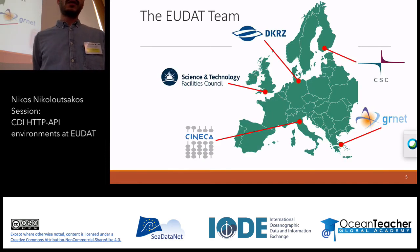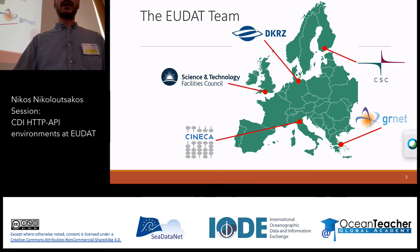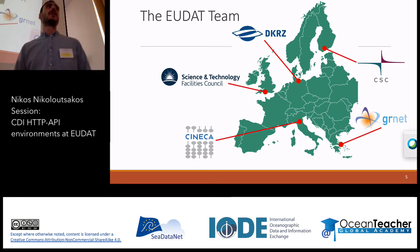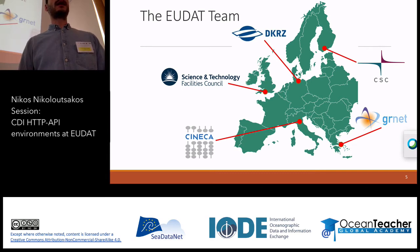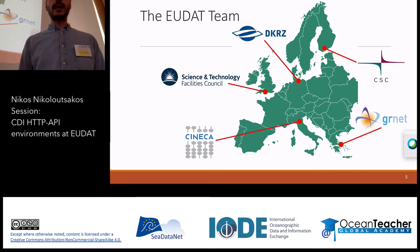Here are the five partners of the EUDAT team: GRNet, CSC, DKRZ, STFC, and Syneca. All those members commit their data center and resources to host the distributed data and to replicate all the information between the data centers.